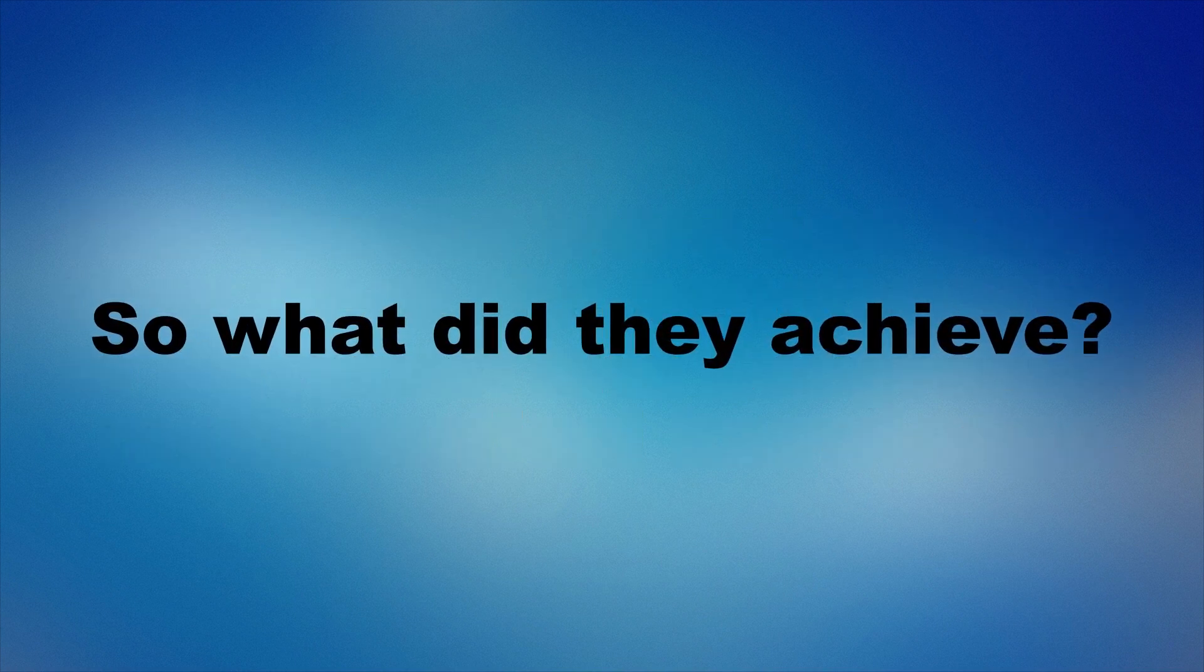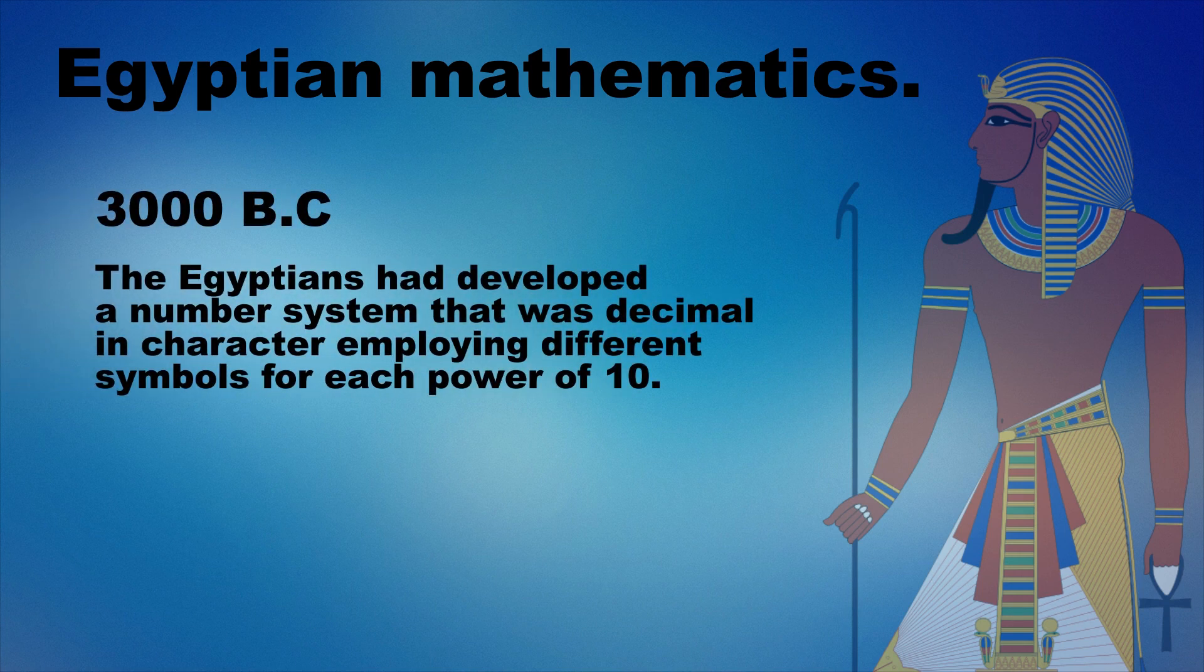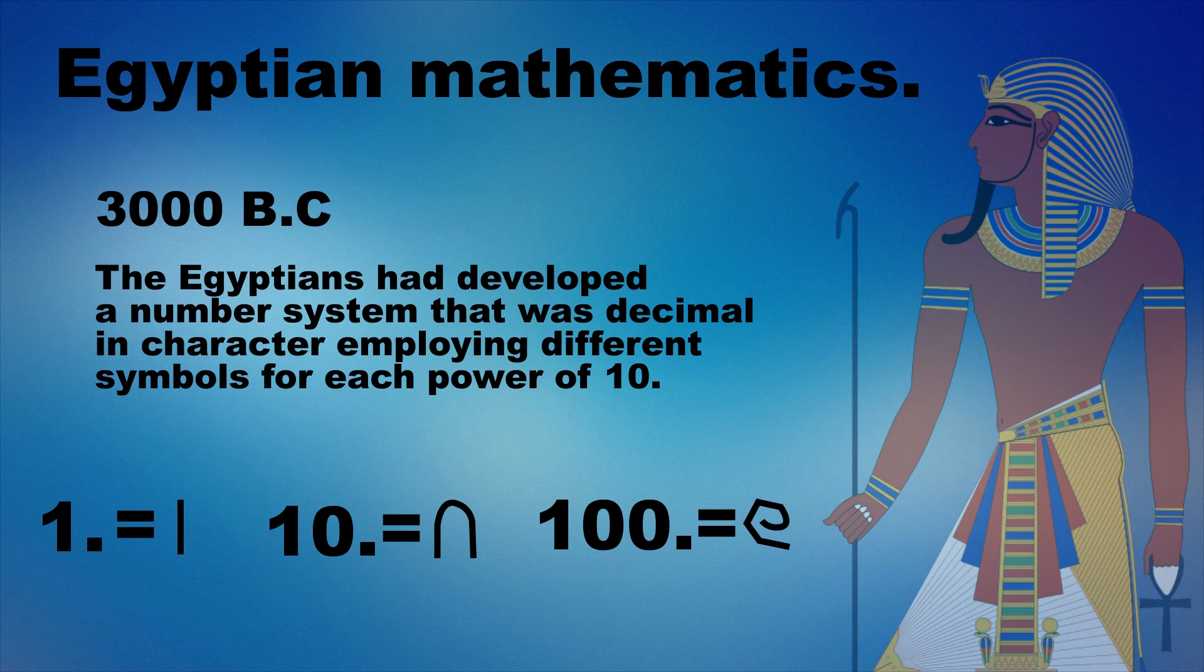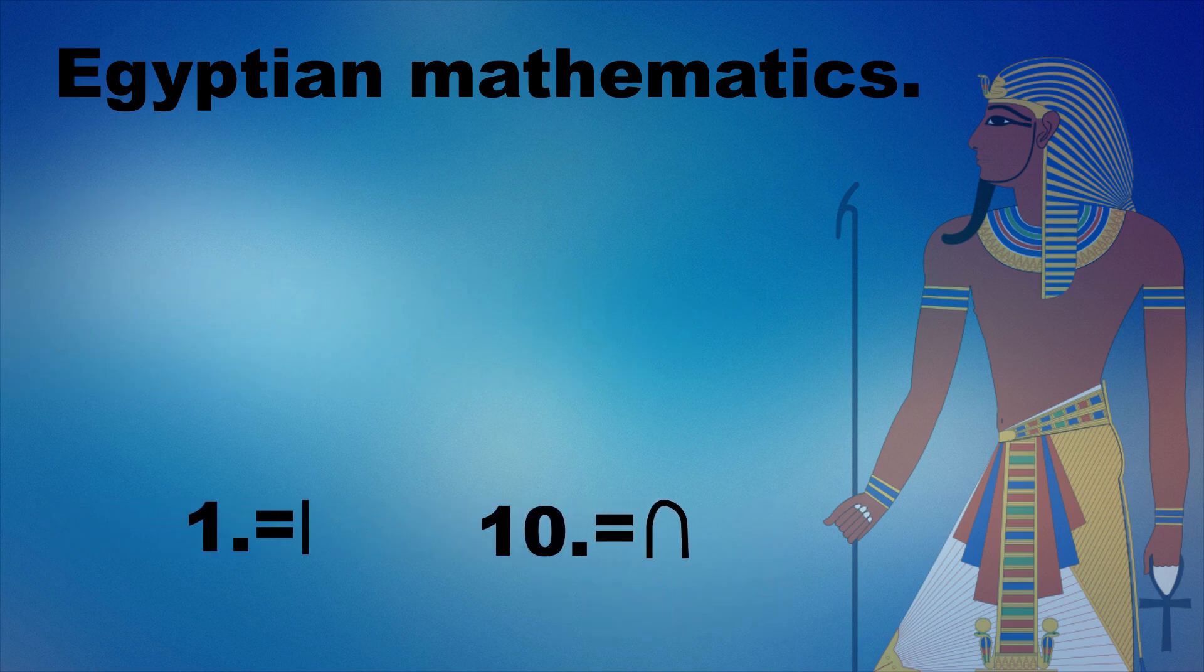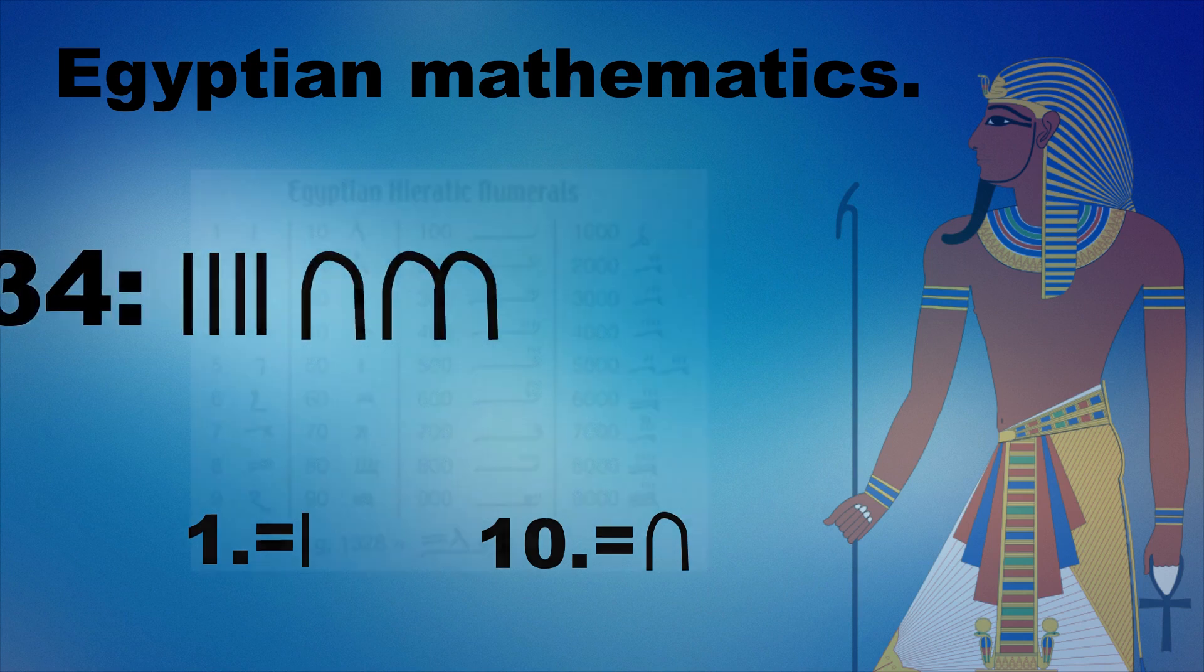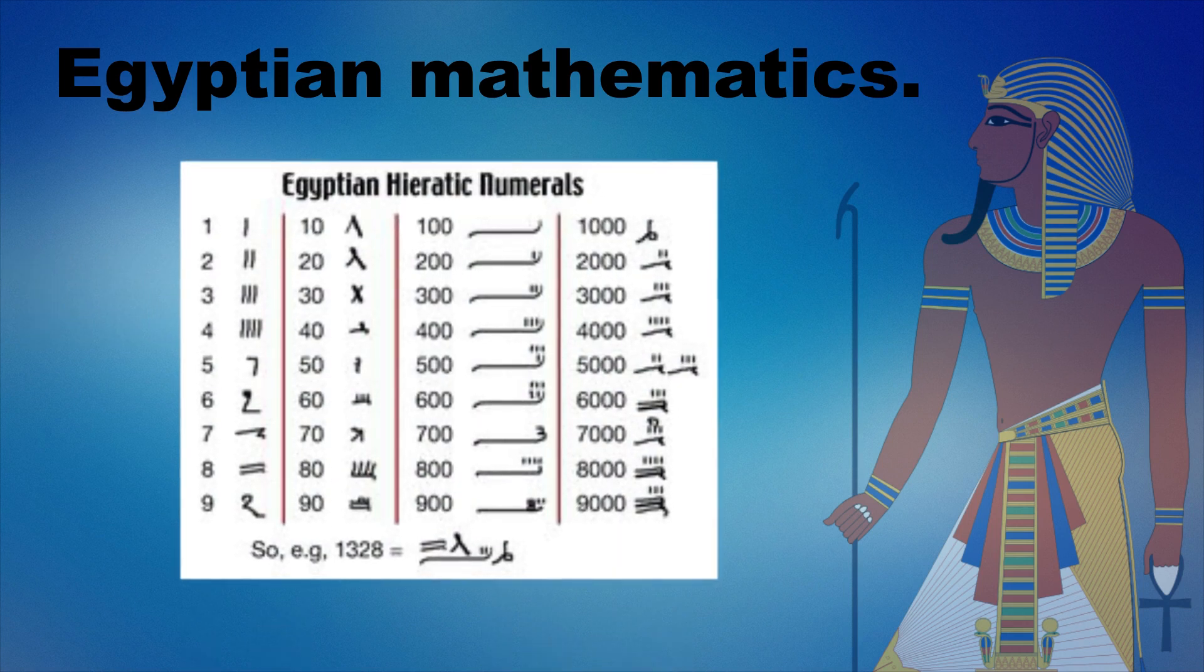So, what did they achieve exactly? Let's start with Egypt. By around 3000 BC the Egyptians had developed a number system that was decimal in character, employing different symbols for each power of 10, which in simple language means that there is one sign for the number 1, one sign for number 10, one sign for 100, and so on. Thus, if this sign represents 1, and this sign represents 10, the number 34 would have been expressed like this. By around 1800 BC additional symbols had been introduced for the other numbers.